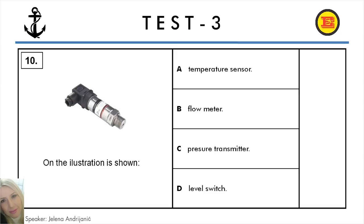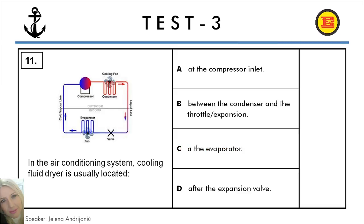Question number 10. On the illustration is shown: A: Temperature sensor, B: Flow meter, C: Pressure transmitter, D: Level switch. And the correct answer is C: Pressure transmitter.